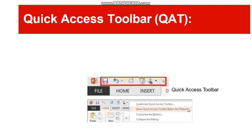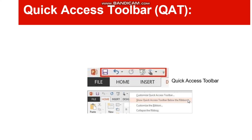Next is the Quick Access Toolbar — the first component of the PowerPoint window. It contains the tools that we randomly and frequently access. We can also customize the Quick Access Toolbar. By clicking on the dropdown arrow, a box labeled 'Customize Quick Access Toolbar' appears, and from there you can choose which functions or tools to add to it.